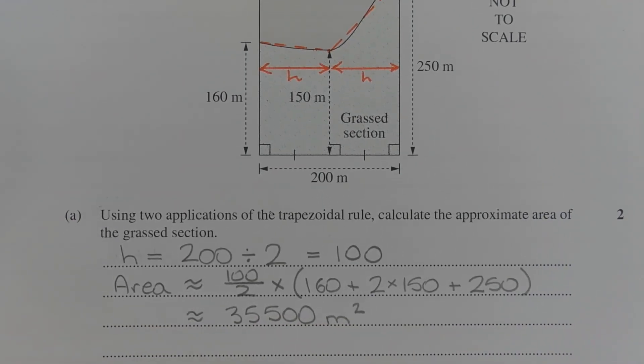To find the approximate area of the grassed section, we apply two applications of the trapezoidal rule, which can be done in one step. The area is approximately equal to h over 2, or 100 over 2, times 160 plus 2 times 150 plus 250, which is approximately equal to 35,500 square metres.